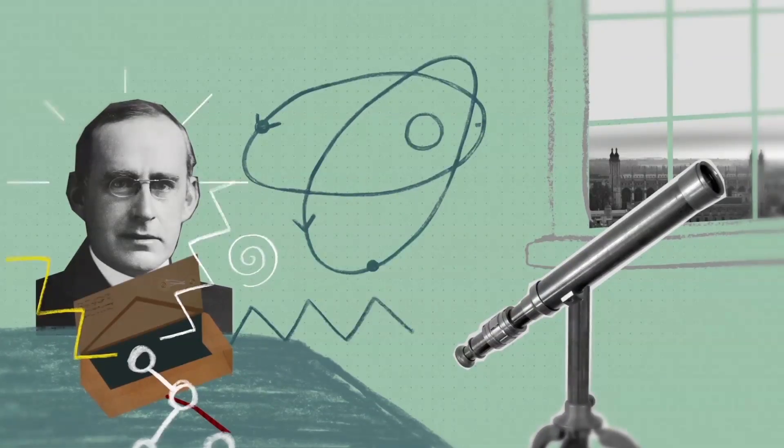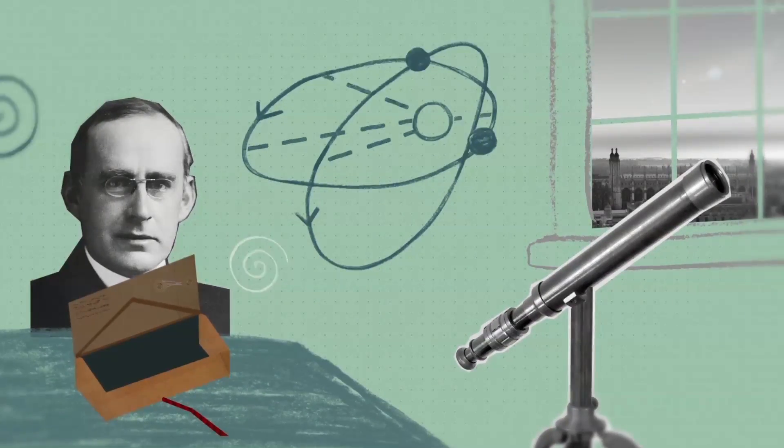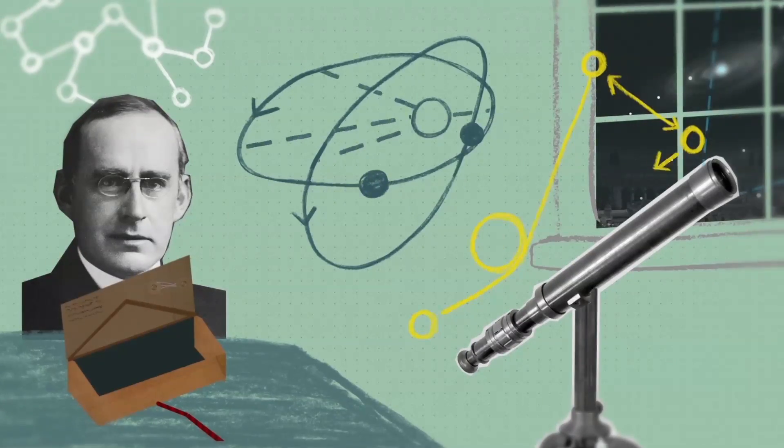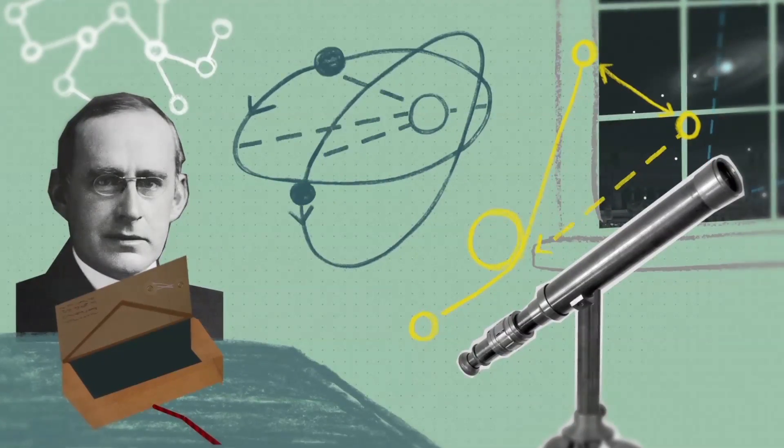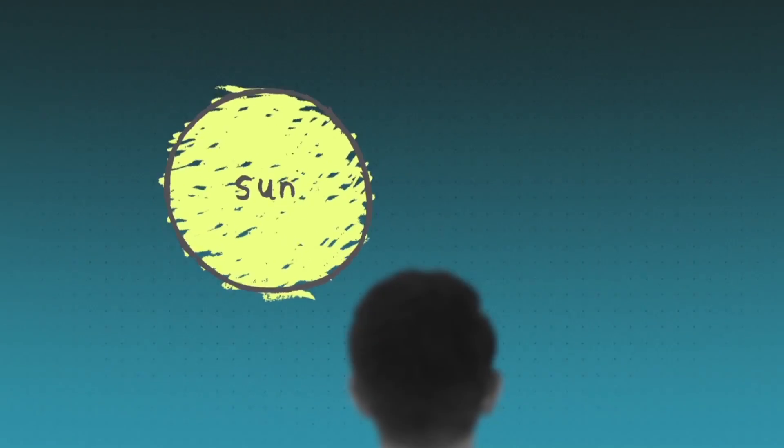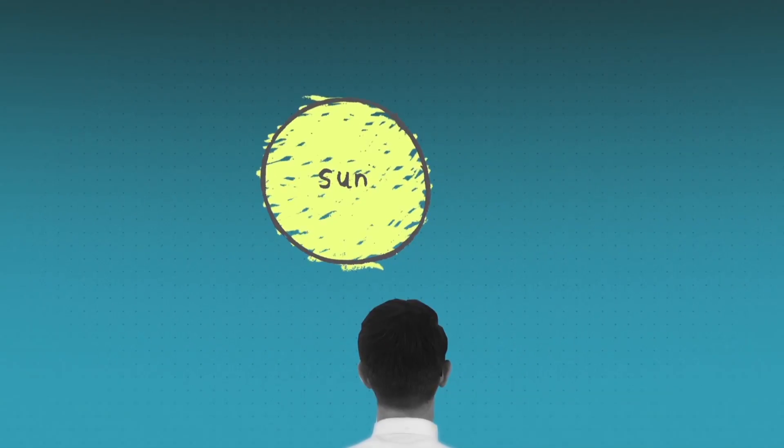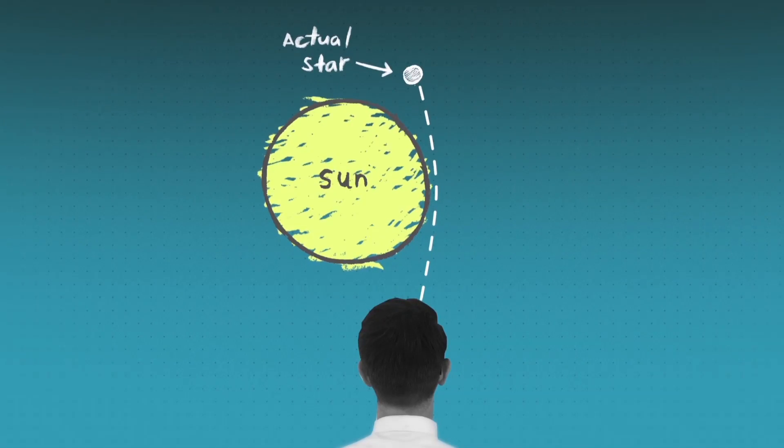Bowled over by its beauty, Eddington became determined to put it to the test. The eclipse of 1919 provided the perfect opportunity. General Relativity predicts that light rays from distant stars should be bent as they travel close to the sun, slightly shifting where they appear in the sky.